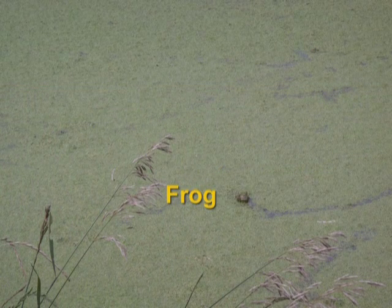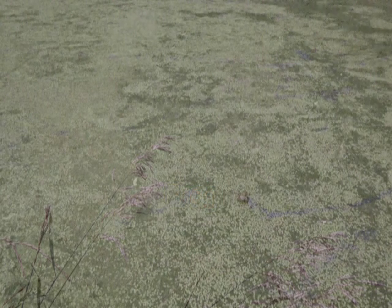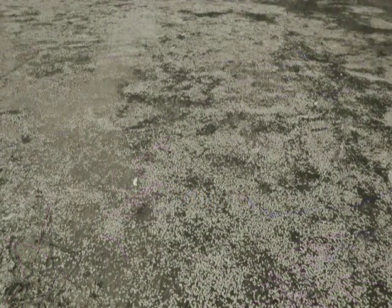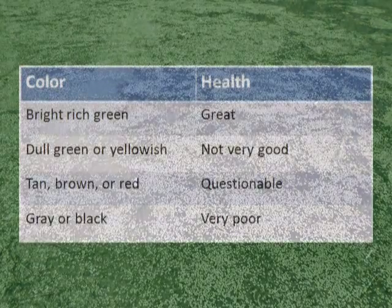Floating plants may be physically removed by raking or may be controlled with herbicides. Select an herbicide for the specific plants to be controlled that does not harm the algae or the environment. Dead plant material resulting from herbicide control adds organic load to the lagoon, which may cause odor and increased sludge accumulation on the floor of the lagoon.